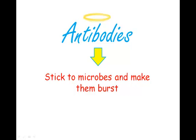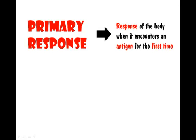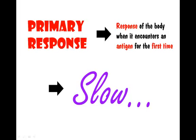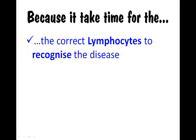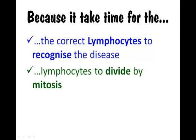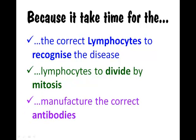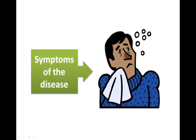Can you tell us a bit about the primary and secondary response? The primary response is the response of the body when it encounters an antigen for the first time. The response is slow because it takes time for the correct B-lymphocytes and T-lymphocytes to recognise the disease, for the lymphocytes to divide by mitosis, and to manufacture the correct antibodies to combat the antigens. During this time, the infected person will have symptoms of the disease.